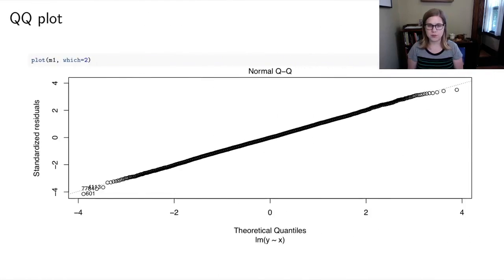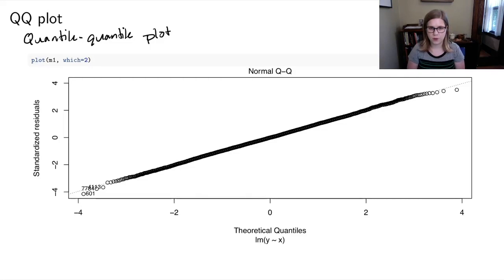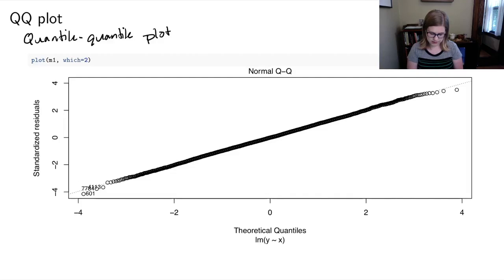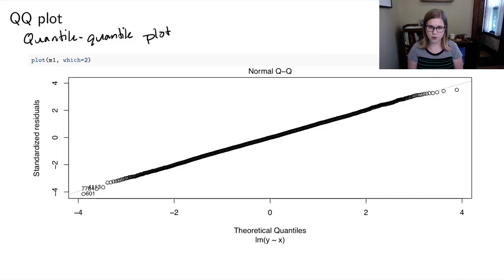Another plot used to assess a model is the QQ plot — the quantile-quantile plot. It compares a theoretical normal distribution against the actual residuals from the data, using standardized residuals centered at zero extending out to one, two, three, or four standard deviations. What you want to see on a QQ plot is a nice straight line, with all the circles falling close to the dotted reference line. This looks good — it's conforming to the normality condition.